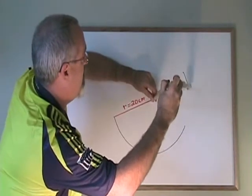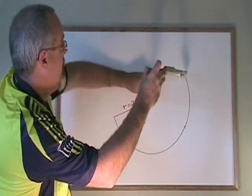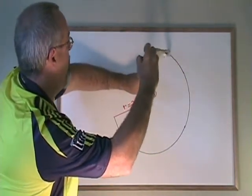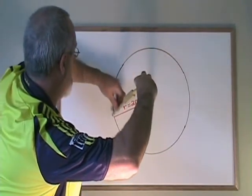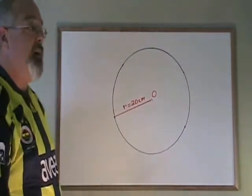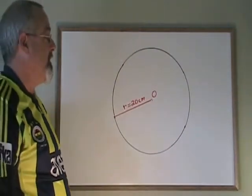This can take a few tries and you have to be delicate. The end result is that I have a circle that I know is 20 centimeters in radius.